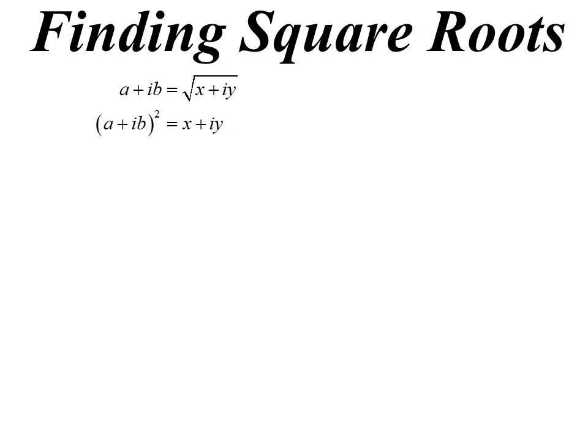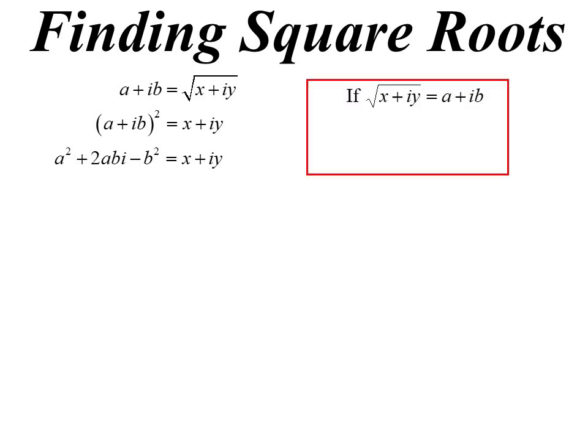Now because we substitute into the quadratic formula and get plus or minus the square root of something that might not be real, we need to know how to find square roots of complex numbers. If a plus ib is the square root of x plus iy, then squaring both sides gives a squared plus 2ab i minus b squared equals x plus iy. Equating real and imaginary parts: a squared minus b squared equals x, and 2ab equals y — giving us simultaneous equations.